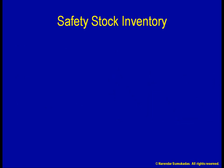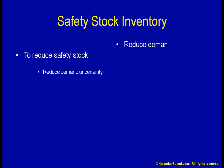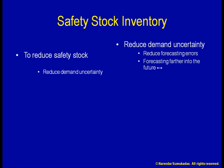The reason for safety stock is demand and supply uncertainty. Reducing the uncertainty will allow us to reduce the safety stock. To reduce demand uncertainty, we can try to improve our forecasting process. The lower our forecasting errors, the lower the need for safety stock. Also, the farther I am trying to forecast into the future, the more uncertainty there will be.